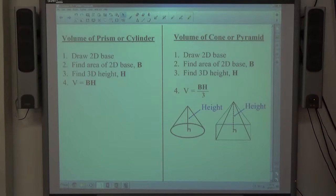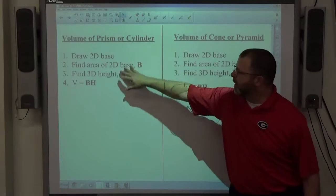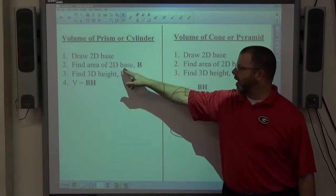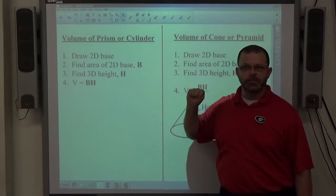The next two problems involve finding the volume of a cone or a pyramid. On the left-hand side here, I've got the prism or cylinder. That's what we've already done, right? You draw the base, you find the area of the base, you find the height, and multiply.